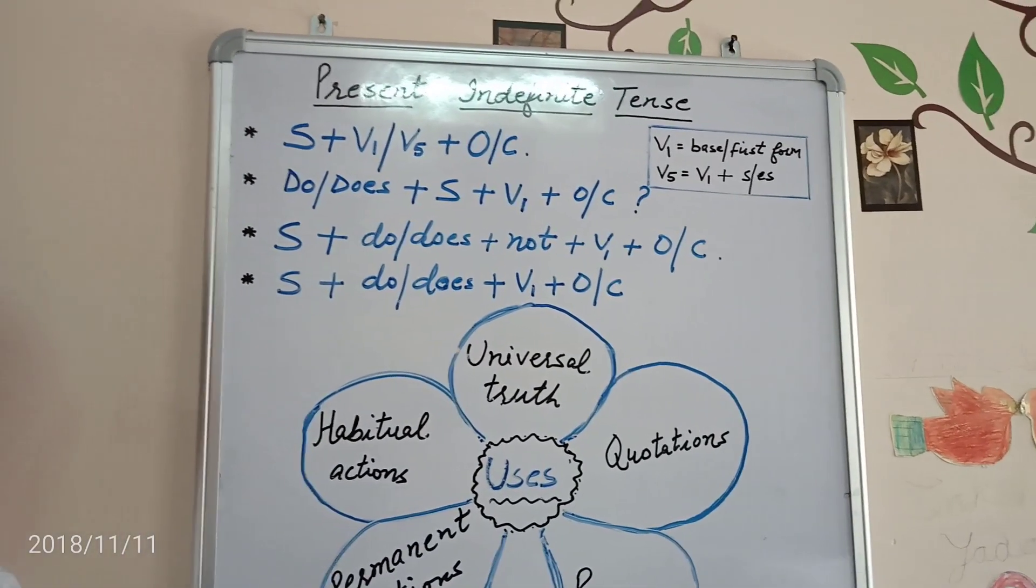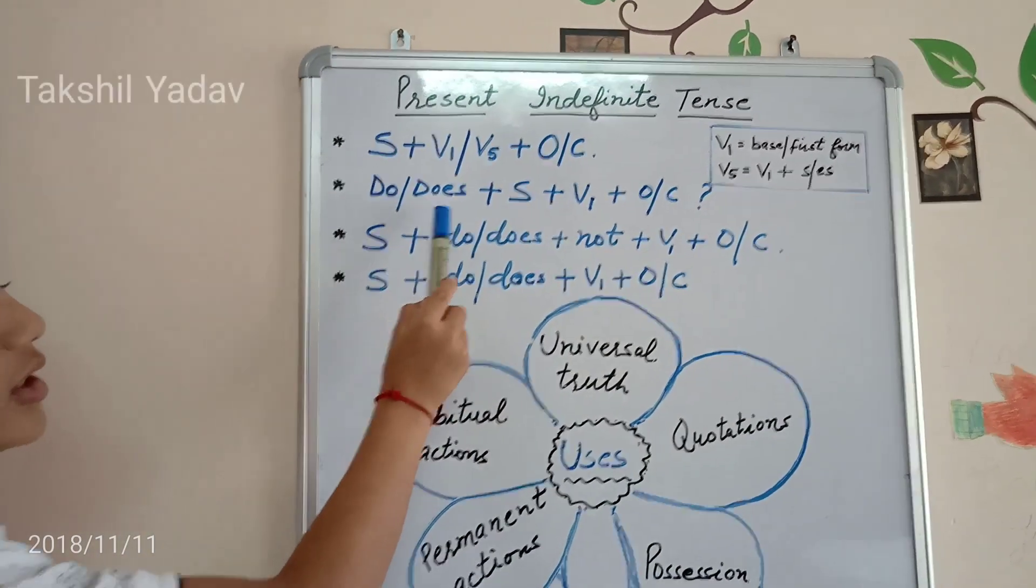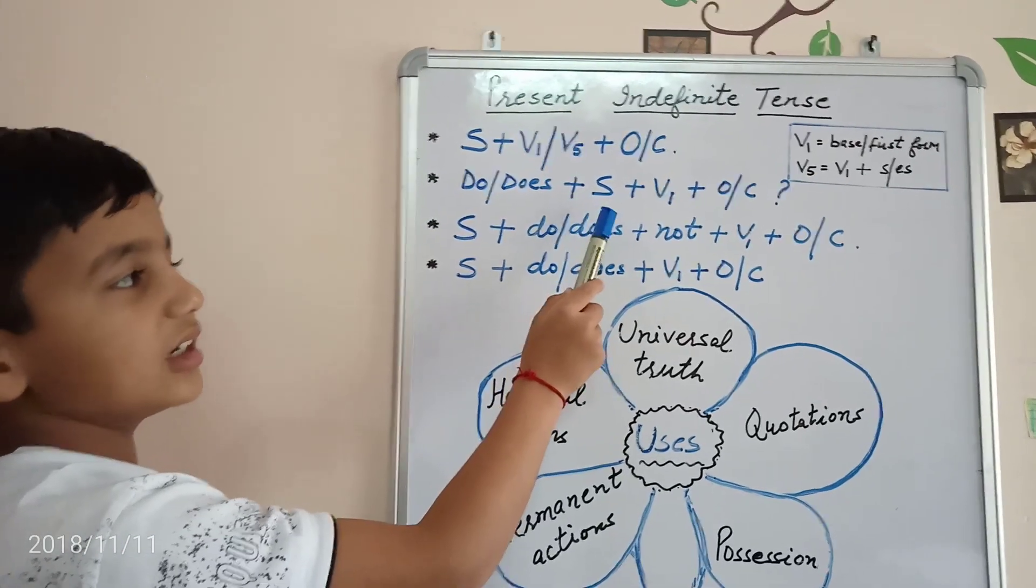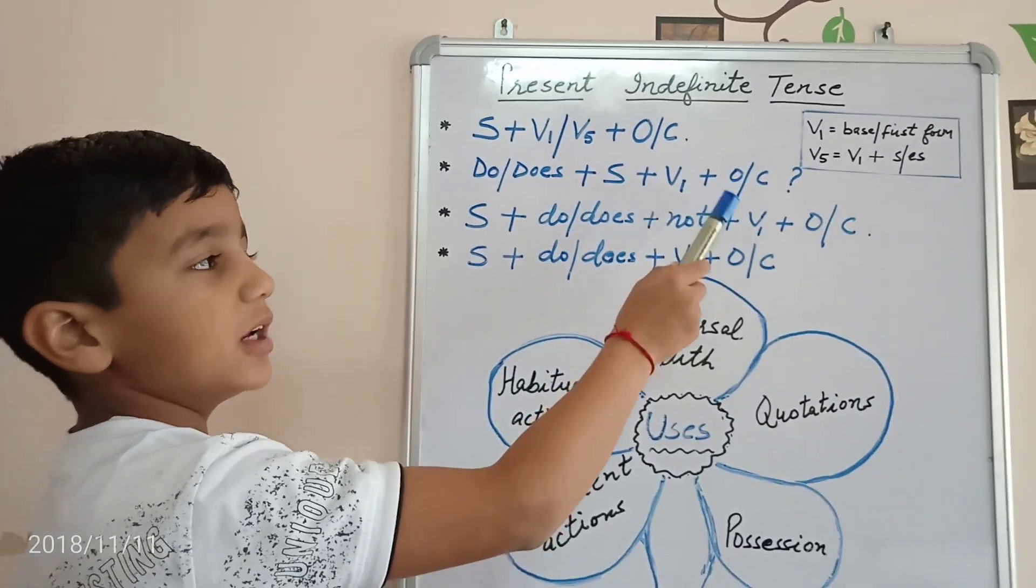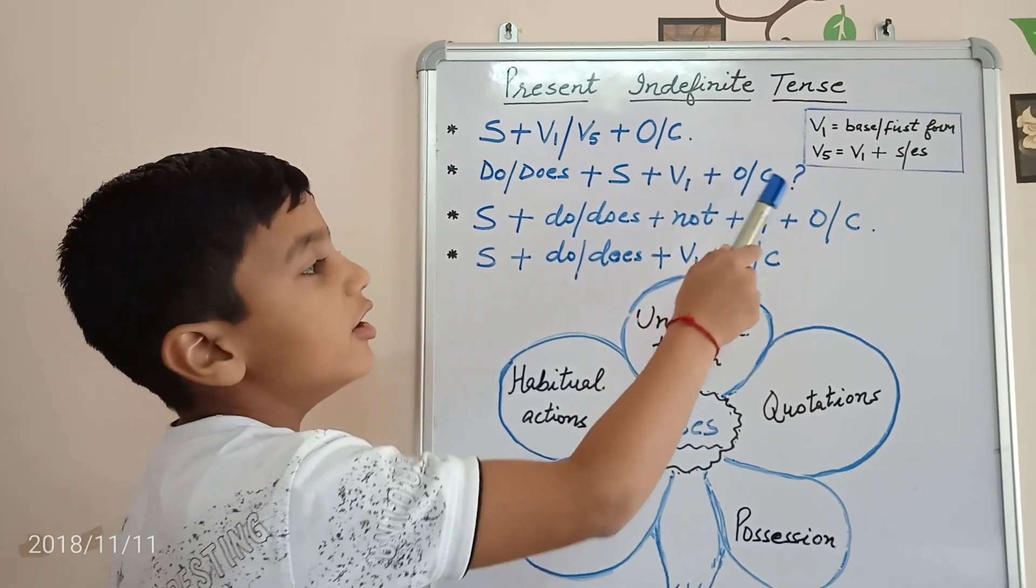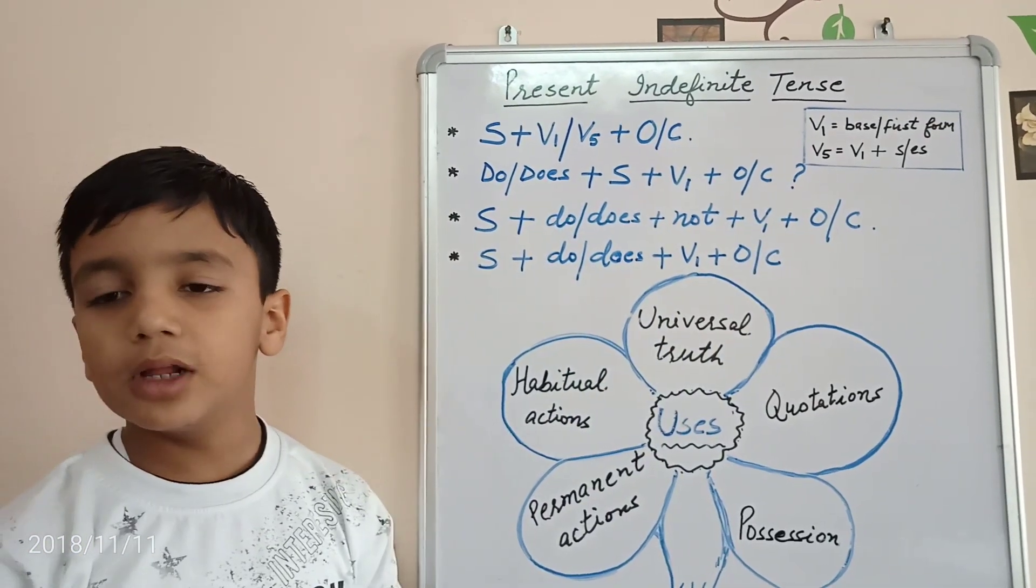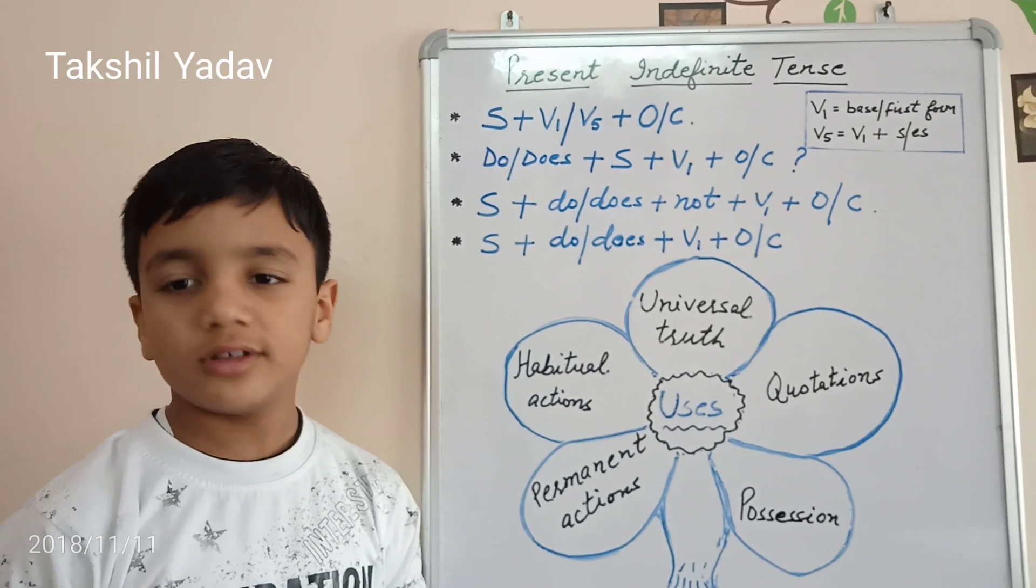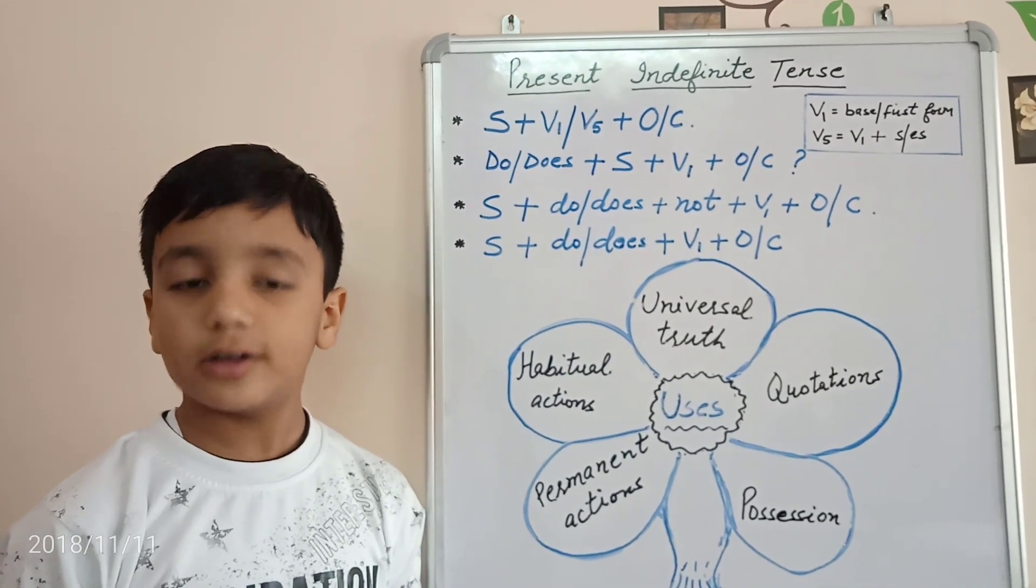Its interrogative structure: Do or Does plus Subject plus V1 plus Object or Complement and Question Mark. For example, Do I go to school daily? Does he read a novel?